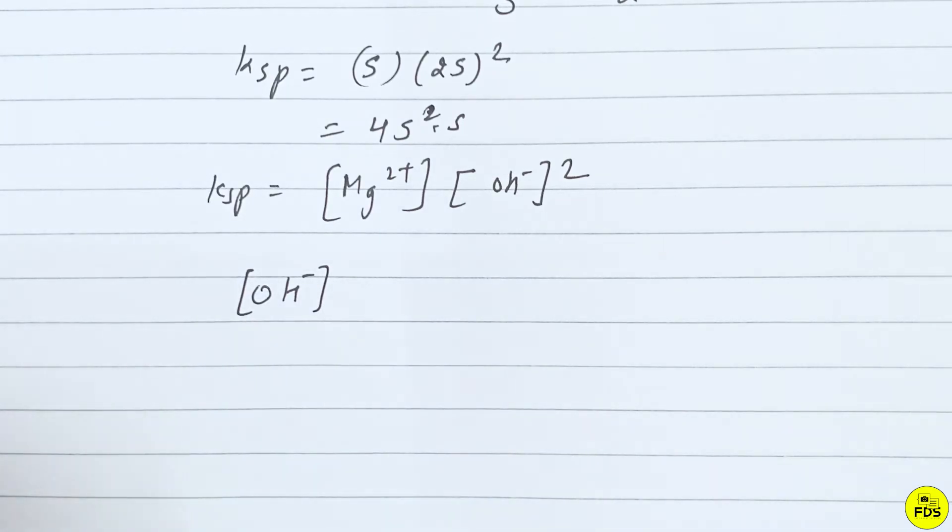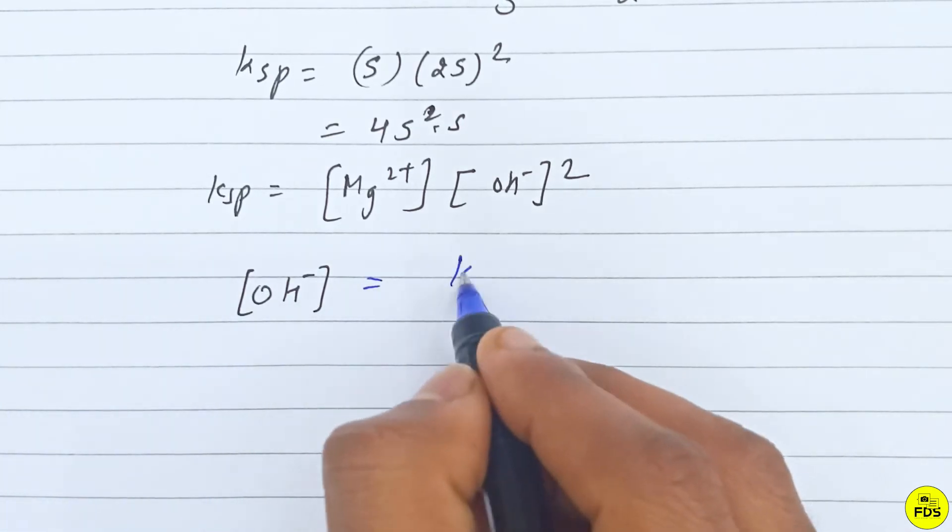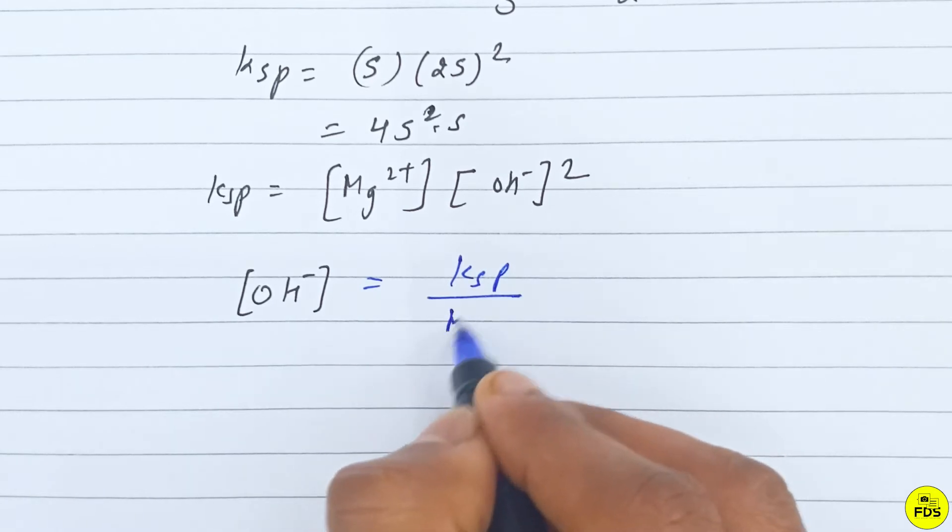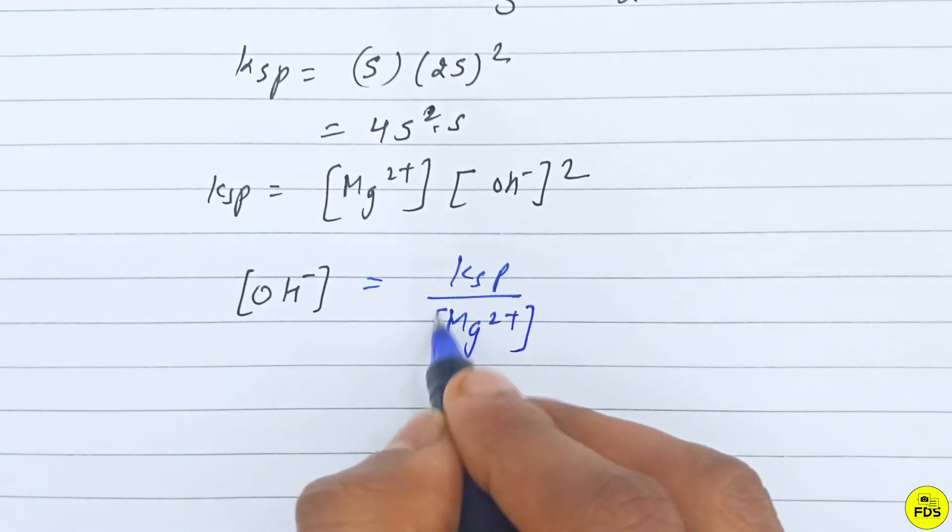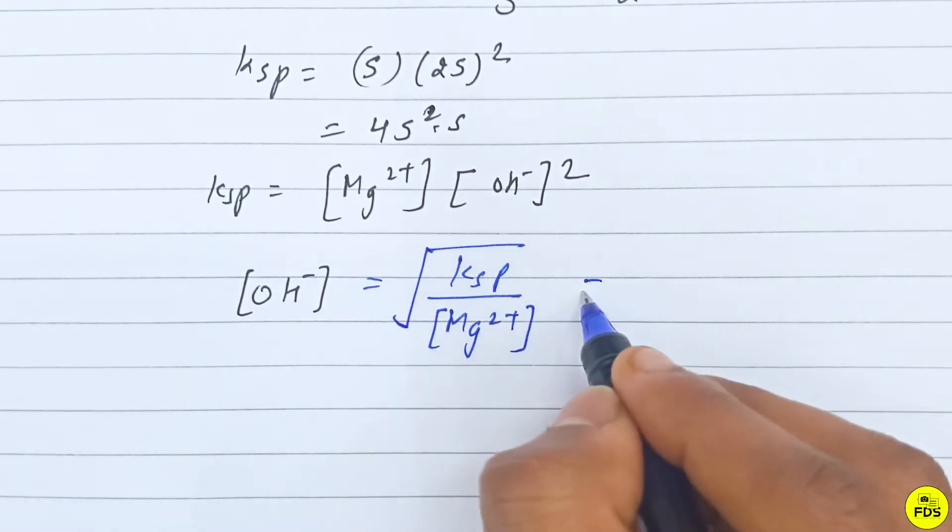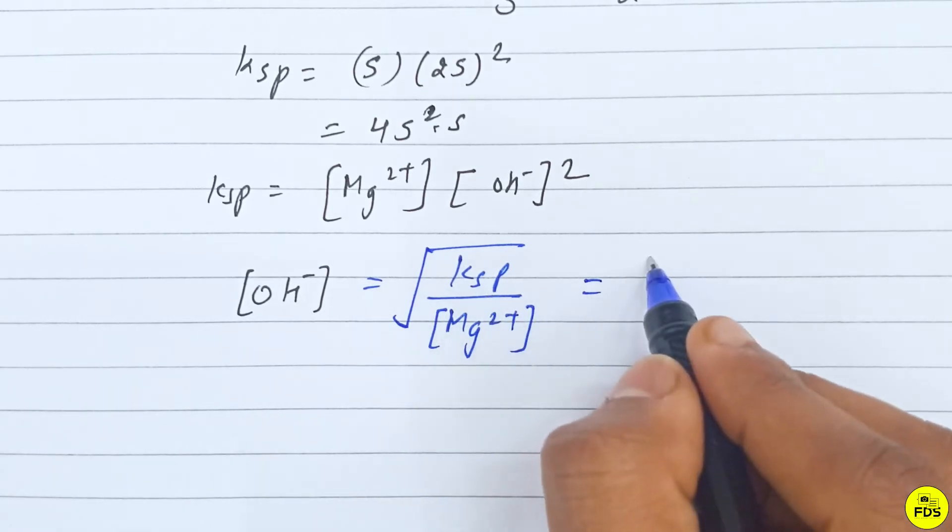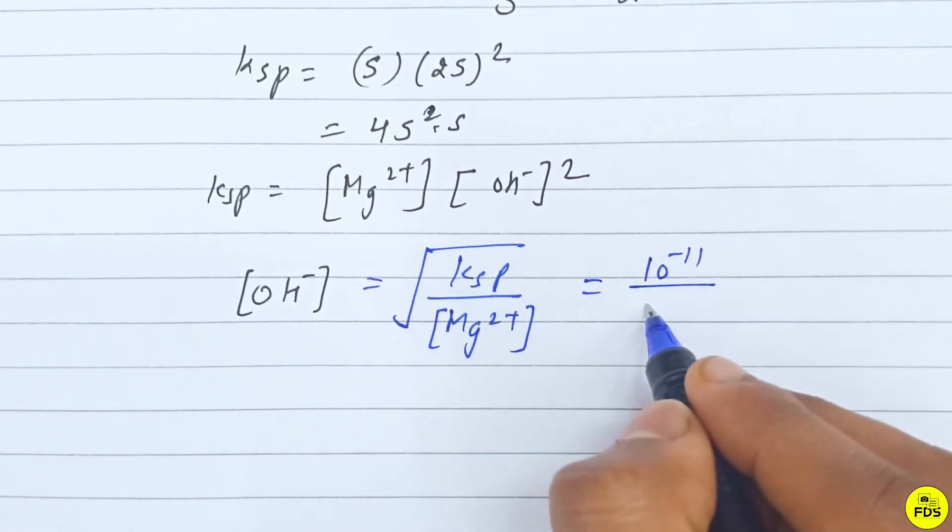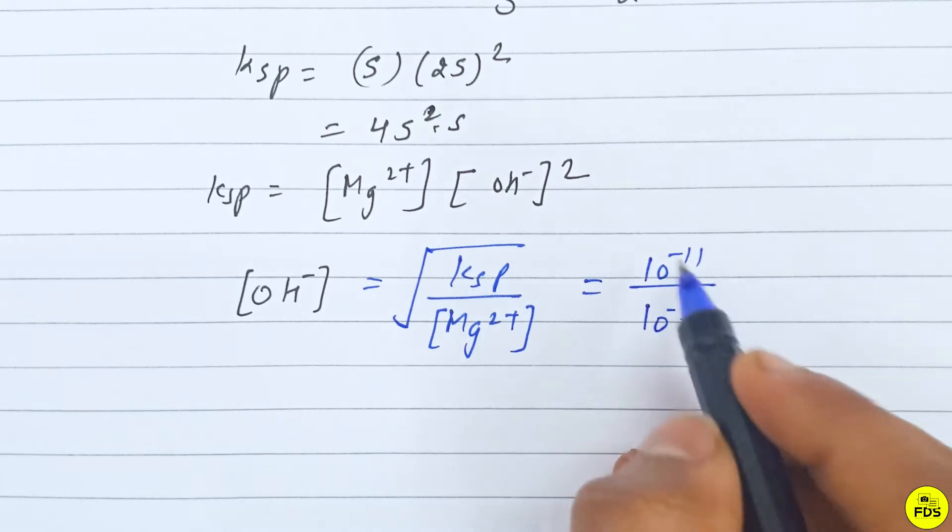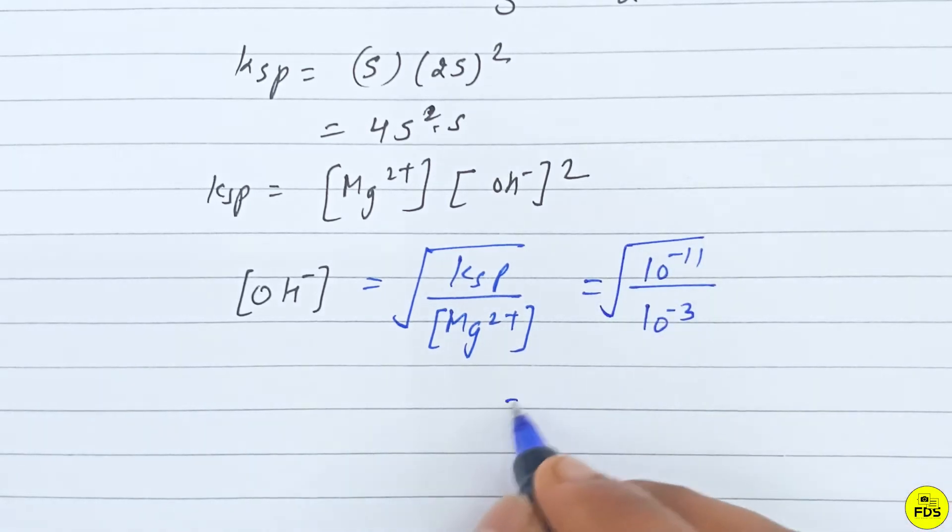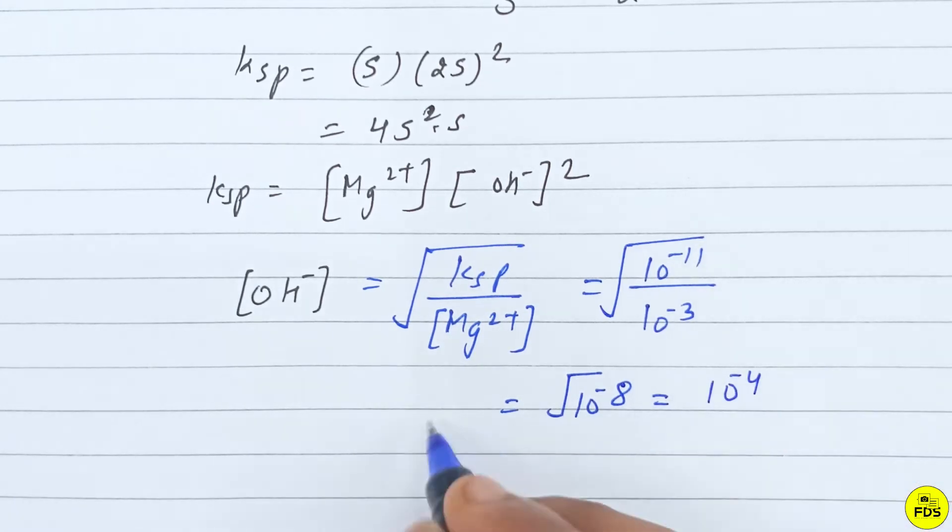OH- concentration is equal to square root of Ksp upon Mg2+ concentration, which equals square root of 10 raised to power minus 11 upon 10 raised to power minus 3, which equals 10 raised to power minus 4.